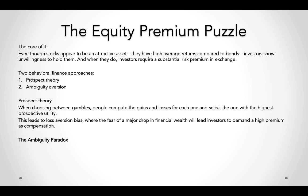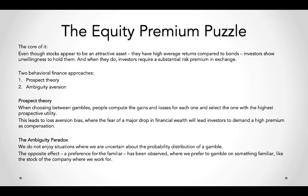Using ambiguity aversion: people dislike situations where they are uncertain about the probability distribution of a gamble, which is very relevant for finance since investors are often uncertain about a stock's return distribution. The opposite — a preference for the familiar — has also been observed. We prefer to gamble on familiar things, like the stock of the company we work for. This is a mistake: it's a double whammy — if the company does poorly, you lose your job and your stock value simultaneously. This is called the home bias.